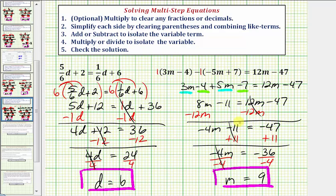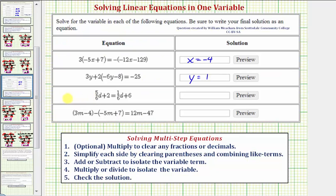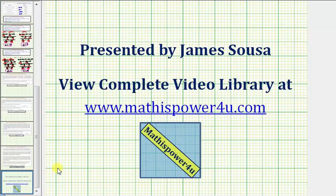I would encourage you to substitute nine for m into the original equation to verify the solution is correct. Going back to our first slide, the solution to the fraction equation is d equals six, and the solution to the last equation is m equals nine. I hope you found this helpful — thank you.